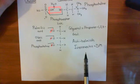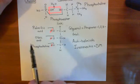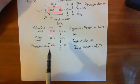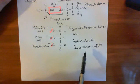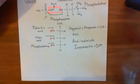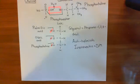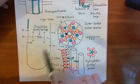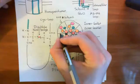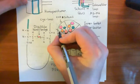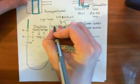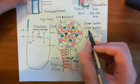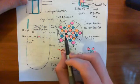Ivermectin is going to bind to the GluCl channel and cause it to open, just like POPC caused it to open. Although we'll see that the way POPC changes the conformation of the GluCl channel is very different from the way ivermectin changes it. It also binds at a different site to POPC. POPC binds between the two M2 alpha helices, whereas ivermectin doesn't bind there — it binds more peripherally, to the outer leaflet of the GluCl channel rather than the inner leaflet.